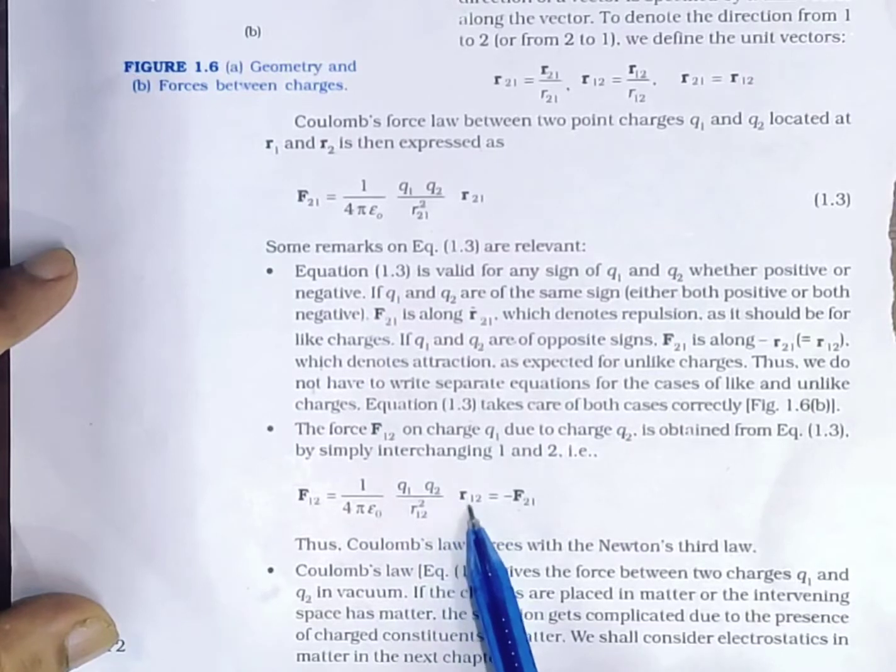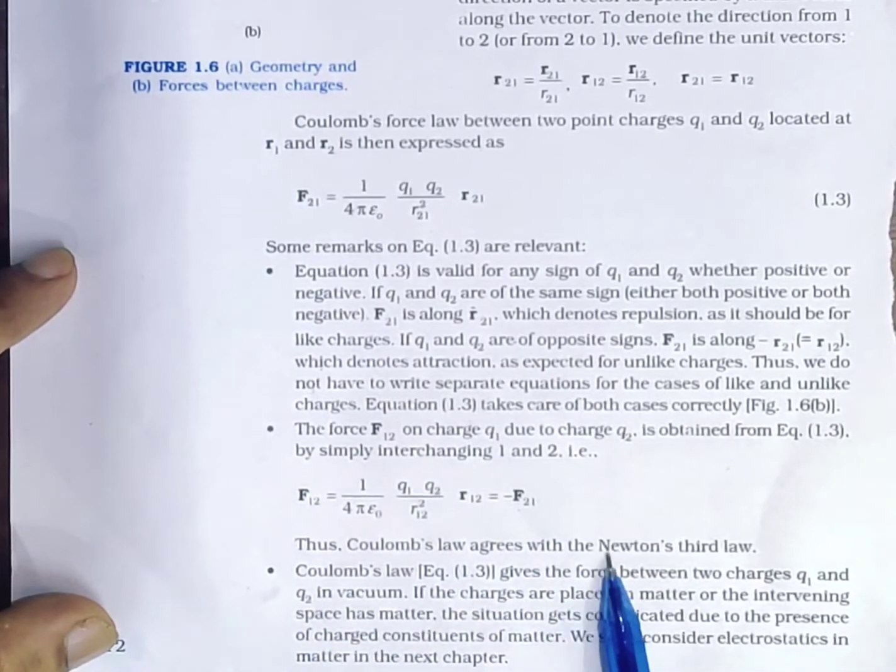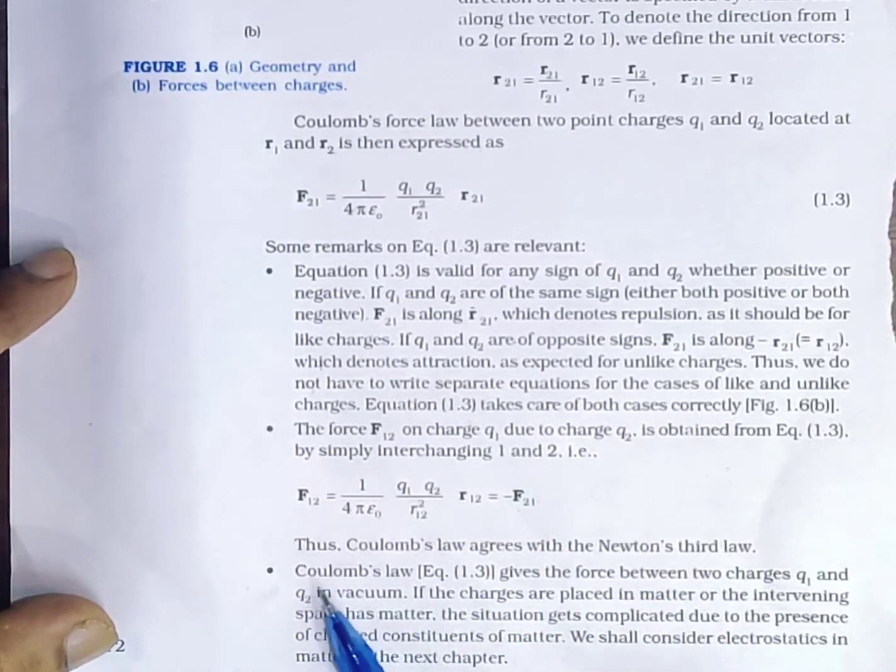F12 equals negative of force vector F21. Thus, Coulomb's law agrees with Newton's third law.